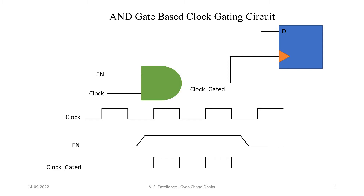We are going to start with an AND gate based clock gating circuit. For an AND gate based clock gating circuit, the restriction on the enable signal is that the enable signal should only toggle when the clock is low. Otherwise, if the enable signal toggles during the time period when the clock signal is high, our clock gated output is going to have some glitch. So in order to prevent any kind of glitch in our clock gated output signal, we have to make sure that the enable signal is toggling only when the clock signal is low.